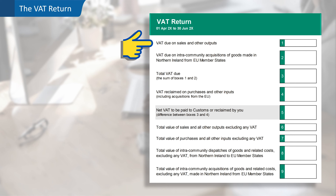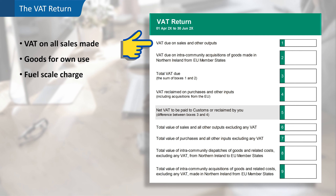Starting at the top is box one. This is for the VAT due on sales and other outputs — the output VAT or output tax on all goods and services supplied in the period. As well as regular sales, remember to include the VAT on goods taken out of the business for private use, as if you own the business you must charge yourself VAT. You should also include the VAT on any fuel used for private motoring where the VAT is accounted for using the fuel scale charge.